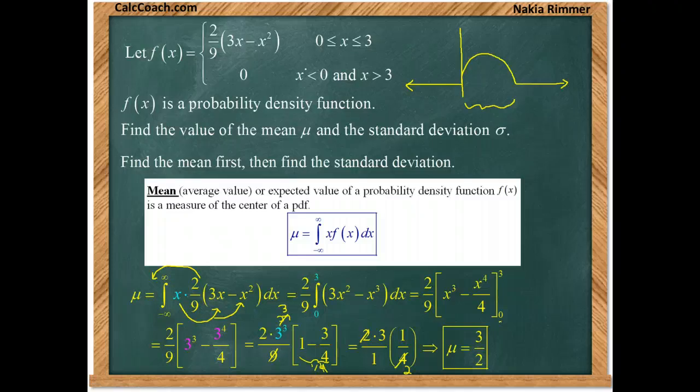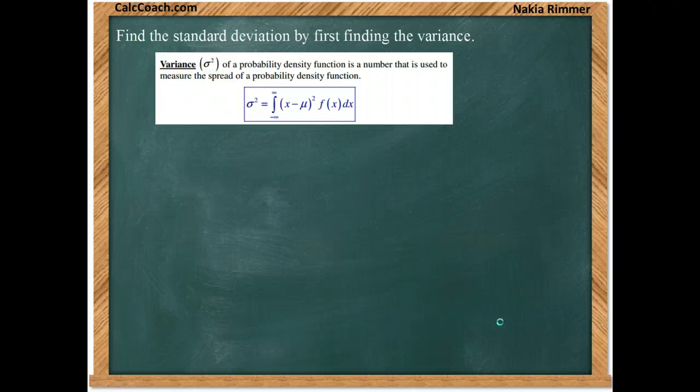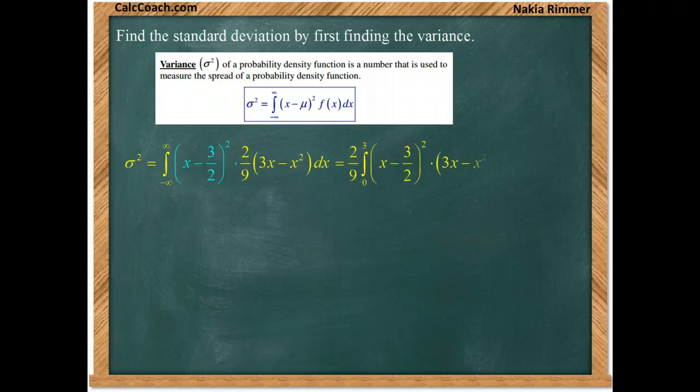Now let's go get the standard deviation. We need the variance first. Remember the variance is the symbol sigma squared. It measures spread and we integrate not x times f of x, but x squared times f of x. So it's going to be a bit messy but it's polynomial integration if you're careful. So let's go get sigma squared. Now it's over the whole real line but we only care about 0 to 3.